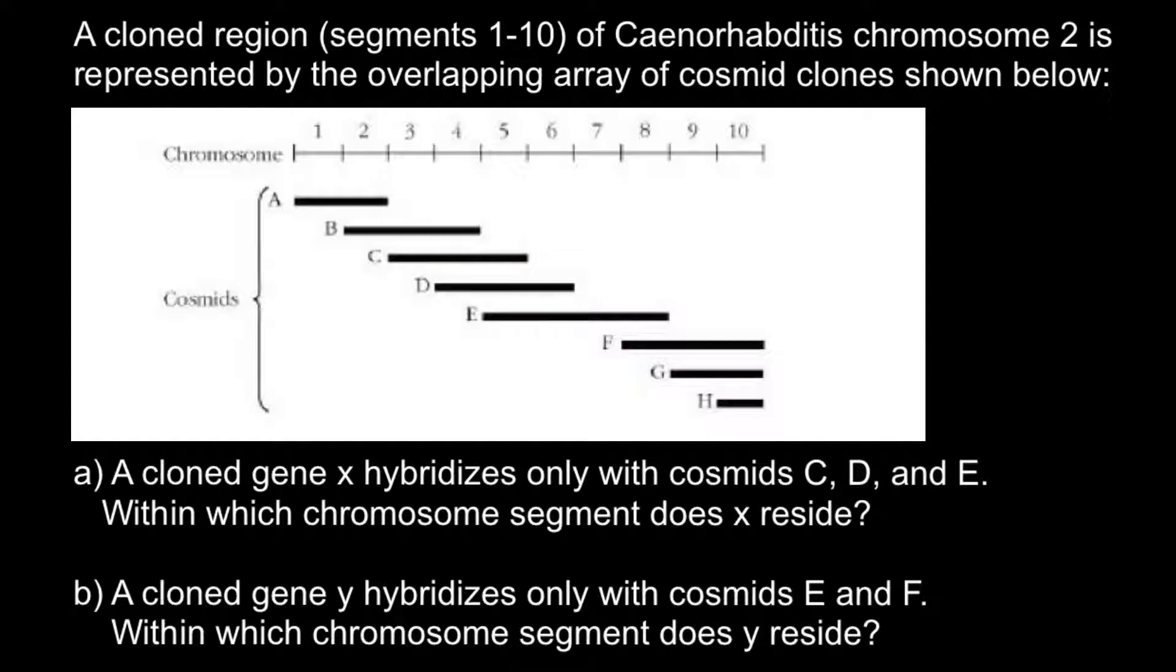I will start with question B. A cloned gene Y hybridizes only with cosmids E and F. Within which chromosome segment does Y reside? The solution to this problem is very easy if I demonstrate something you probably remember from your math course.